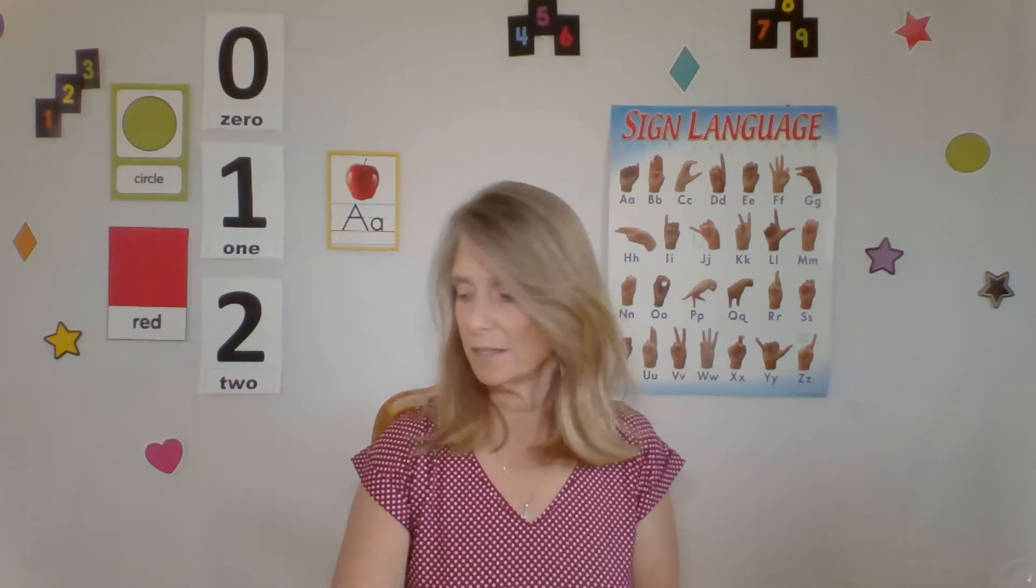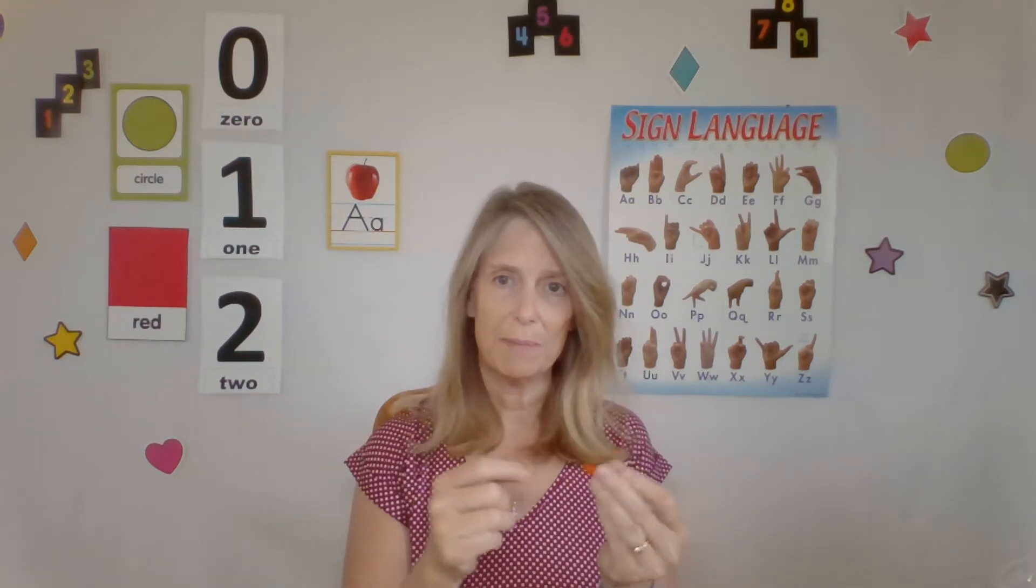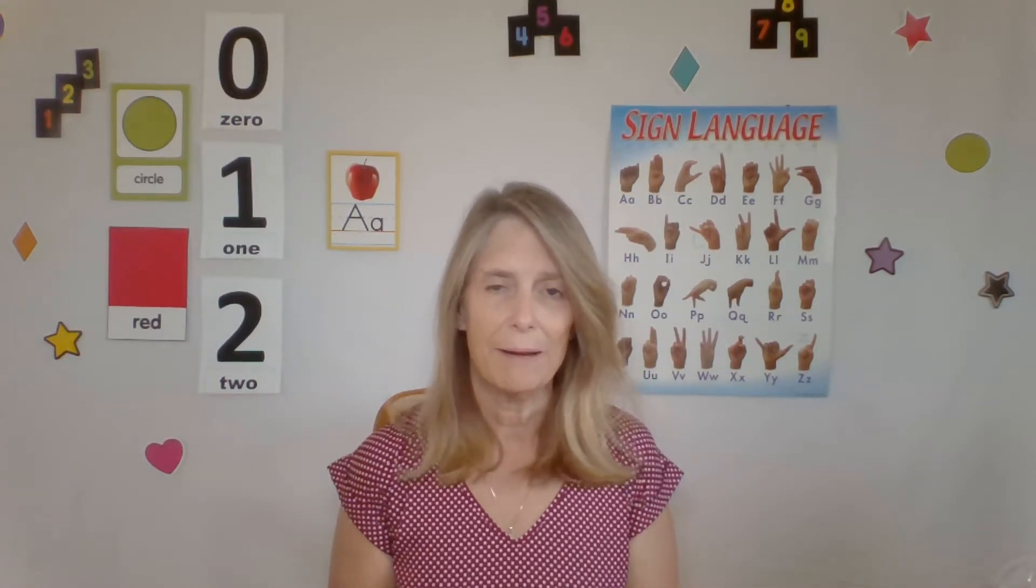Pasta, another great cheap thing. Again, you can color this. Then when we're done using it in the sensory bin, you can take it and string it. Pipe cleaner, string, yarn, whatever you have. Make necklaces. Great fine motor for the kids to be stringing noodles like that. Those are two things you might have around the house. If you don't, they're pretty cheap to buy.